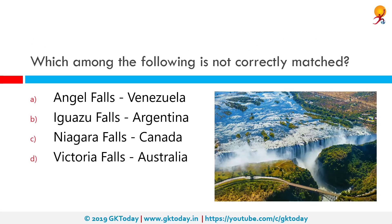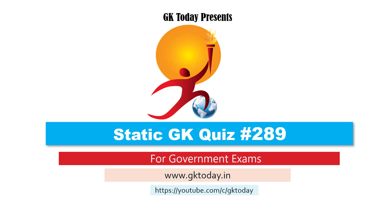Which among the following is not correctly matched? Option D is wrong, as Victoria Falls is in Zambia, which is in Africa. That's all for today's quiz. Until the next video, goodbye.